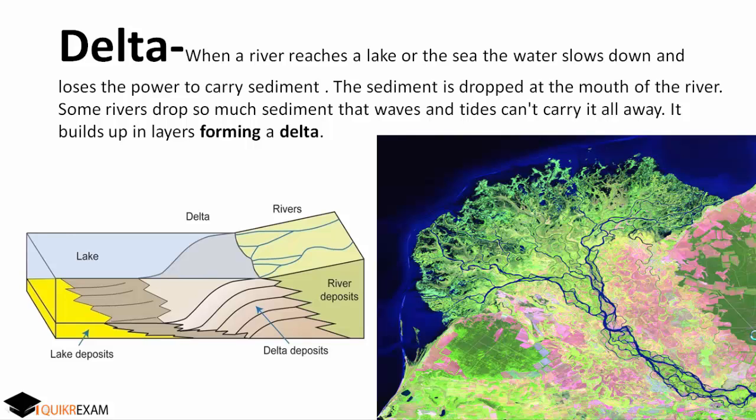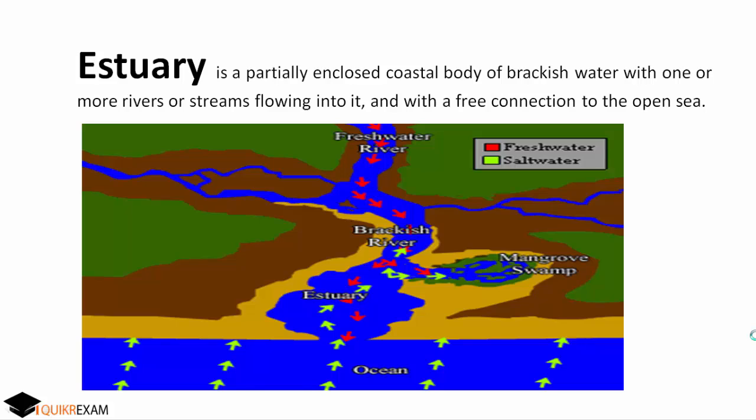What is the main reason some rivers form a Delta and others don't? When a river carries so much sediment that the waves or tides cannot wash it away from the shores of the sea, a Delta forms. Some rivers carry very little sediment, so it gets washed away by the tides or waves. The main criteria is carrying enough sediment that waves or tides are unable to wash it away from the shores.